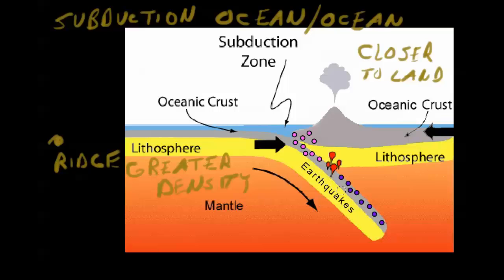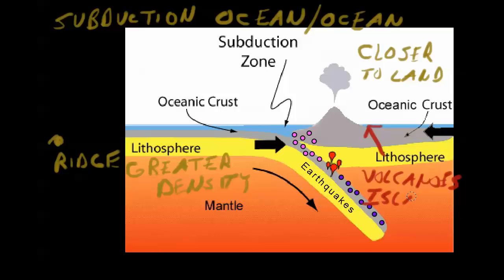One thing people always ask is what side you're going to find the volcanoes on. In ocean-ocean subduction, a volcanic island arc forms. These volcanoes are always formed on the non-subducting plate — the plate that's closest to a continent.